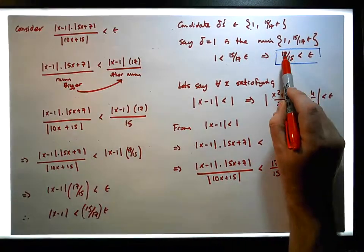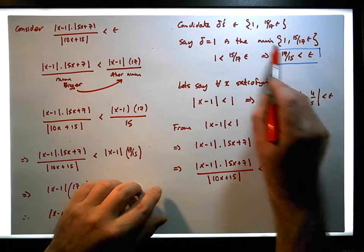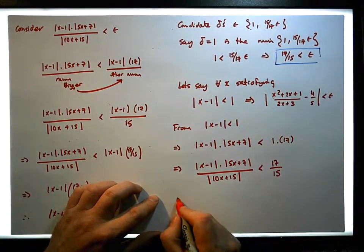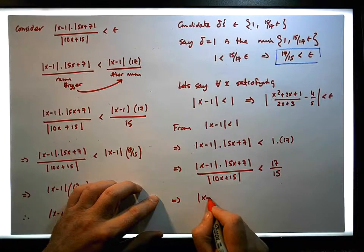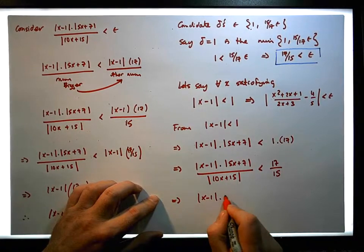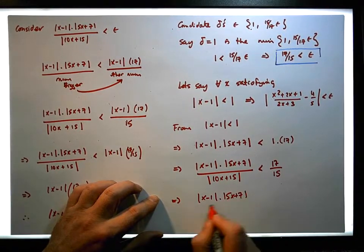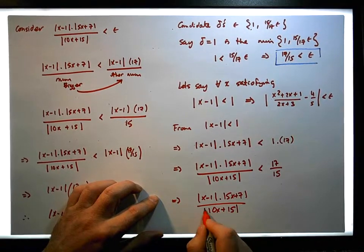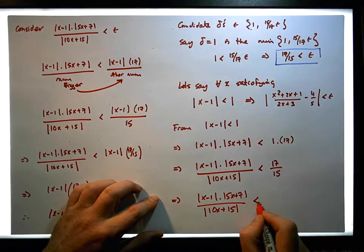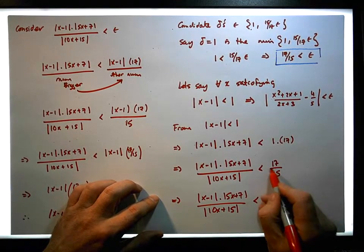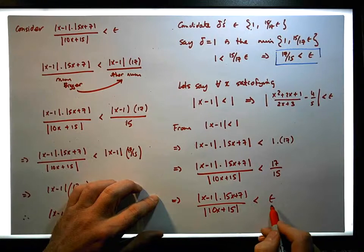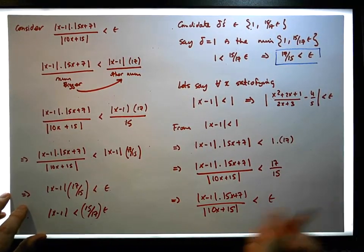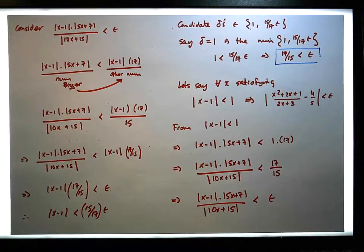But we know that 17 over 15, from our choice of delta, that 17 over 15 is less than epsilon. So this implies that x minus 1 times 5x plus 7 all over 10x plus 15 — we now know that that's less than epsilon, because 17 over 15 is less than epsilon. And now we have transitivity.